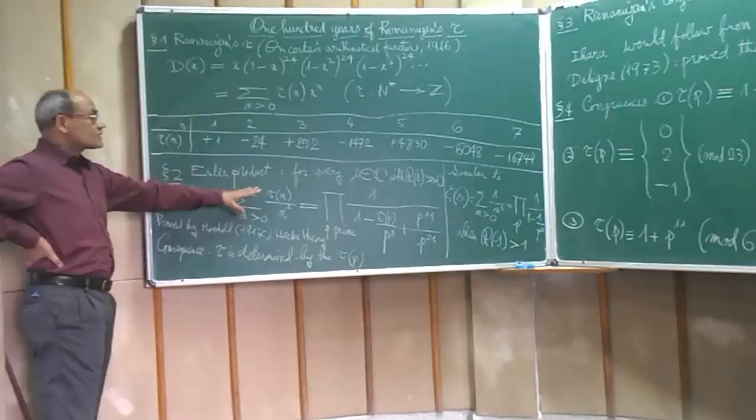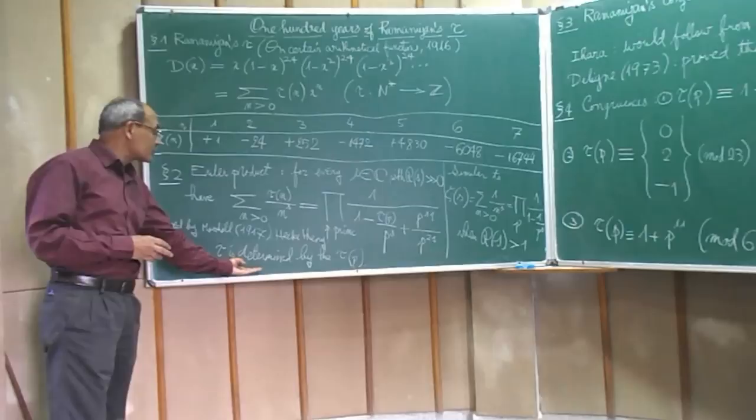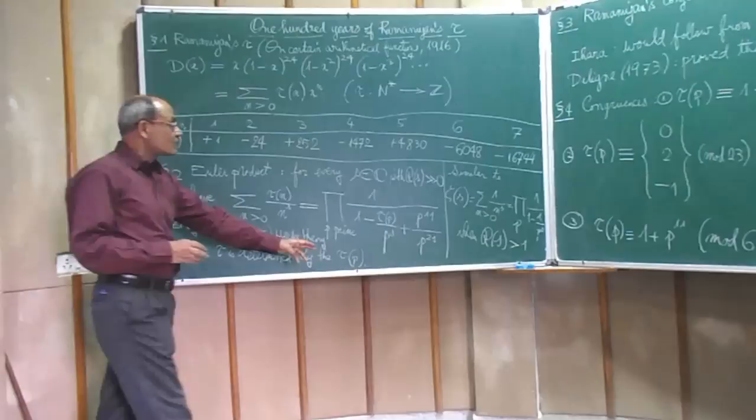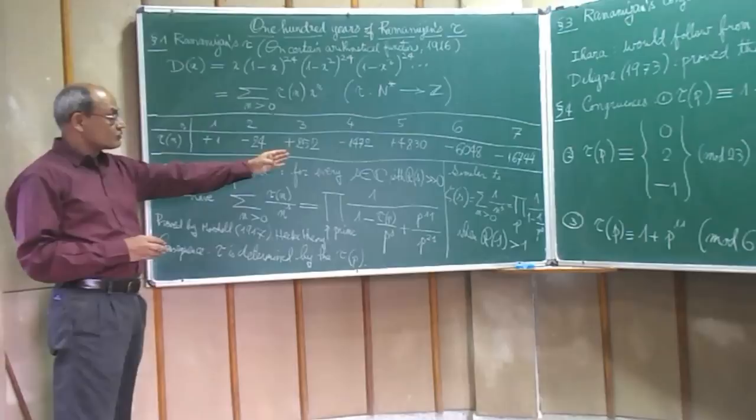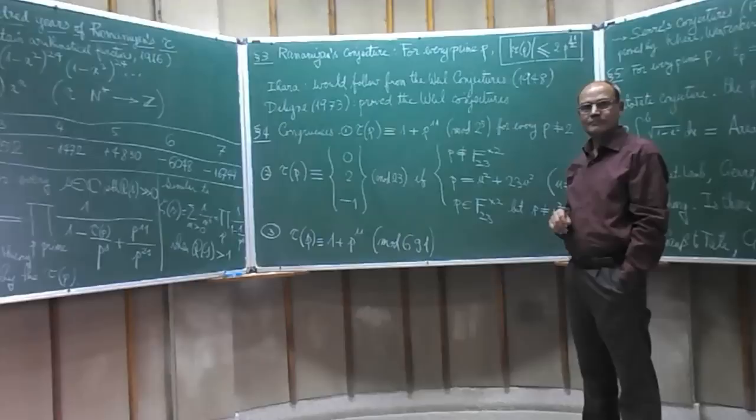Now this was proved more or less immediately by Mordell and now it's a part of what is called Hecke theory. One of the elementary consequences of this is that the tau function is completely determined by its values at the prime numbers. This was not obvious from the definition. So an arbitrary function is not going to be determined by its values at prime numbers, but this one is.